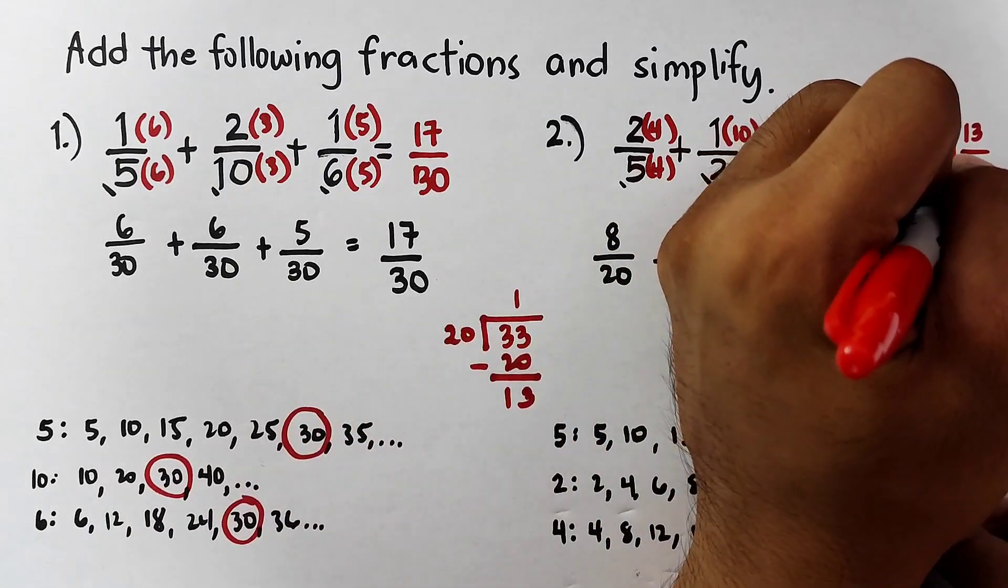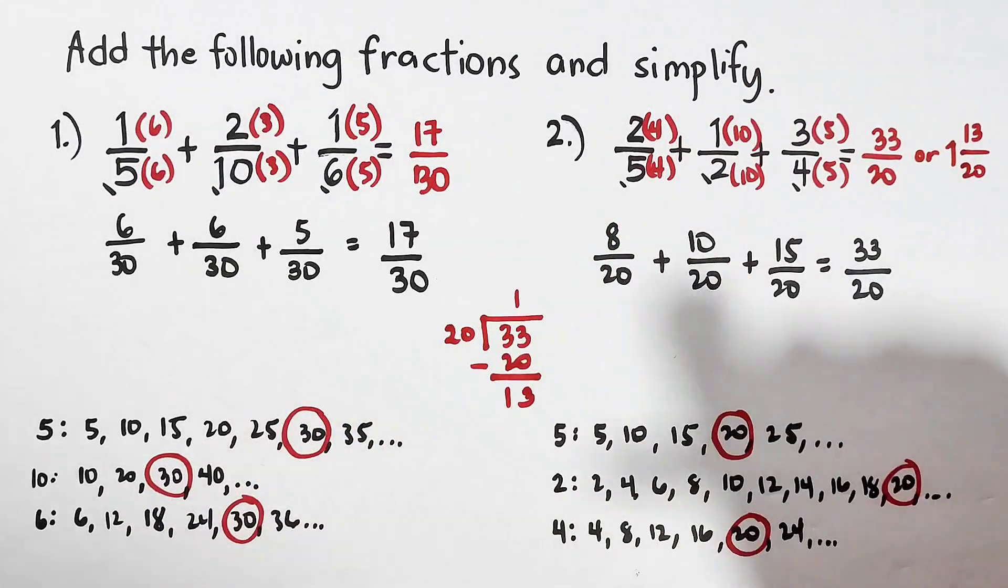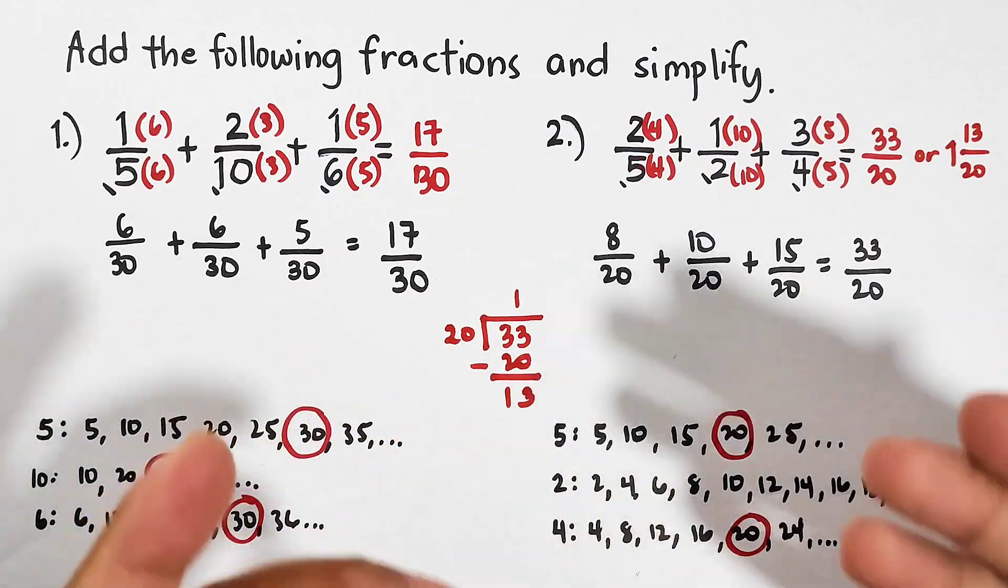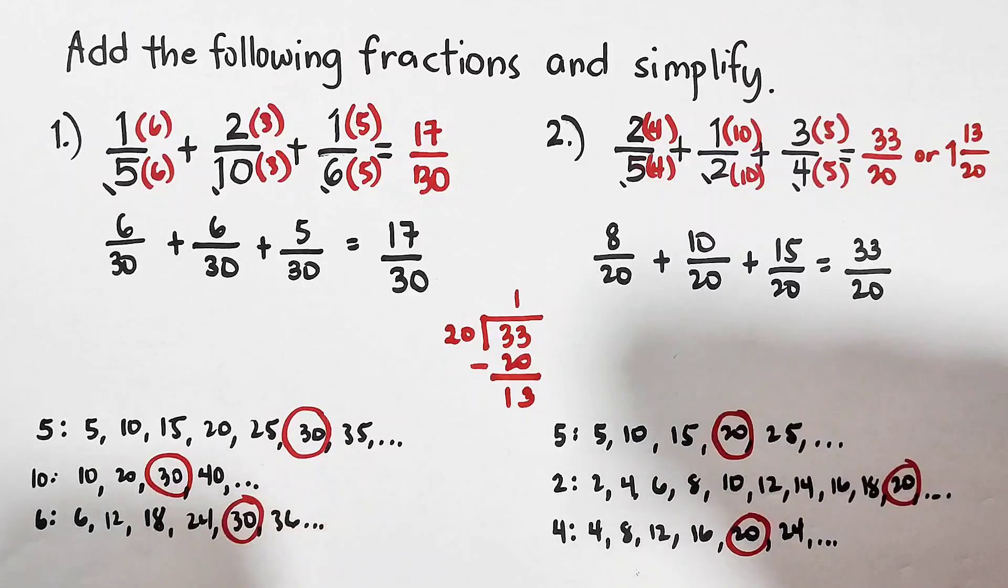and your denominator is 20. So these are the possible answers for item number 2. As part of our routine, I will give you another example for you to answer, and I hope to see in our comment section what is your answer after adding the three fractions.